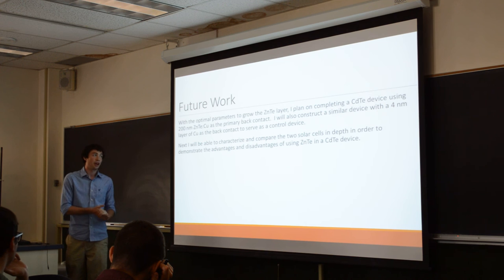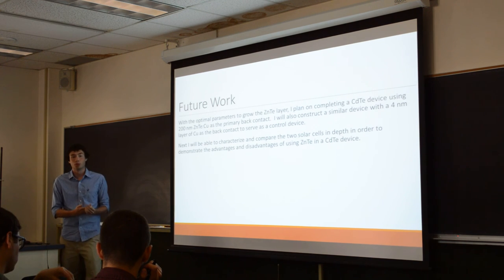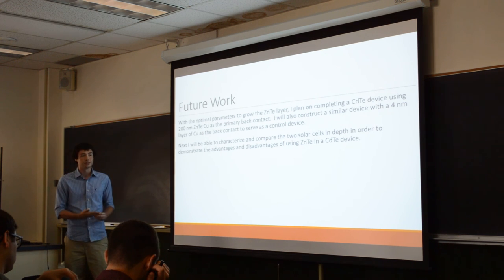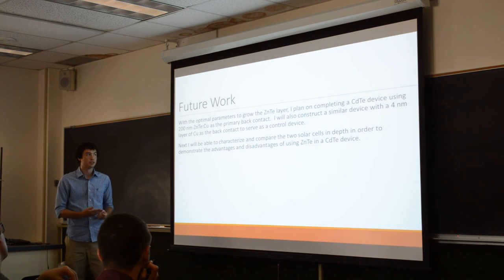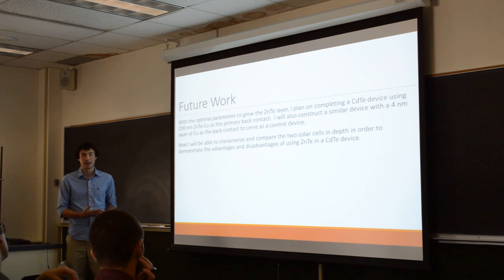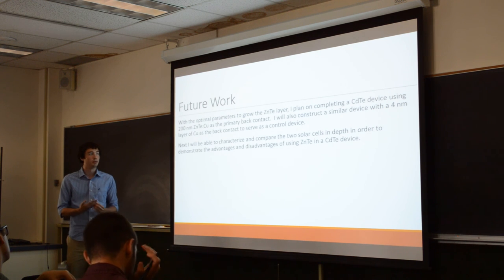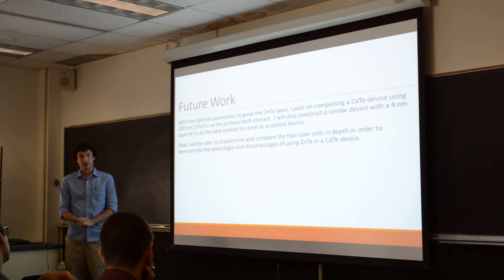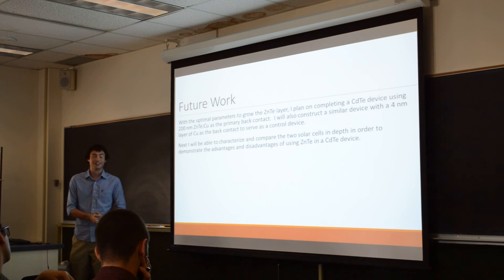Right now I'm working on completing two cadmium telluride devices. One uses 200 nanometers of 2% copper-doped zinc telluride as the interface between the cadmium telluride and the gold, and the other uses just 4 nanometers of pure copper between the cadmium telluride and the gold. I'll be able to characterize the properties of both films, compare them, and then conclude some of the advantages and disadvantages of using zinc telluride over pure copper as the interface layer in a cadmium telluride device.